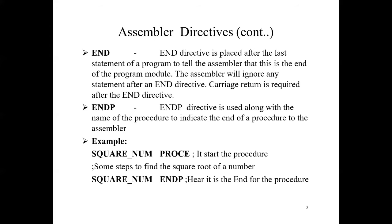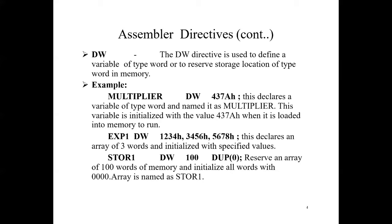Next is DD (Define Double Word). DD defines a double-word type variable. If there is only one value, four bytes of consecutive memory locations are reserved; if there are multiple values, four bytes are reserved for each value. General format: name DD initial_value(s). Example: 'number DD 23958634' — this directive informs the assembler to reserve four bytes of memory for the variable named 'number' and initialize it with the value 23958634.